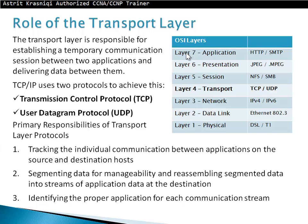Revisiting the OSI layers: layer 7 is Application, with protocols like HTTP and SMTP. Layer 6 is Presentation, with formatting protocols like JPEG and MPEG. Layer 5 is Session, with protocols like NFS and SMB. Layer 4 is Transport, where TCP and UDP operate. Layer 3 is Network with IPv4 and IPv6. Layer 2 is Data Link with Ethernet 802.3, and layer 1 is Physical with DSL and T1s.